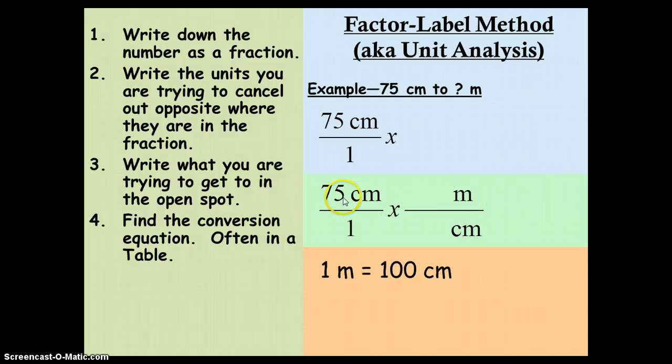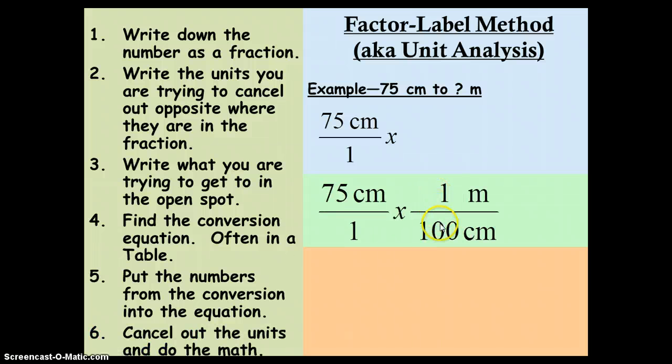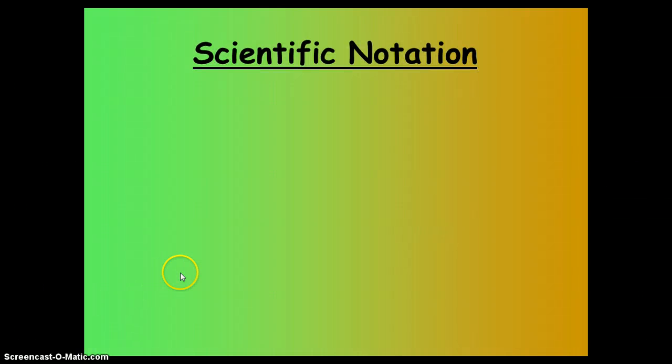You look up the conversion in a table. 1 meter equals 100 centimeters. And then you put the numbers in place where they go. 1 goes in front of the M for meters. And 100 goes in front of the centimeters because that's where you have your 100 for centimeters. The last step is to just multiply and cancel out the units. Centimeters divided by centimeters, they're going to cancel out. So you end up with 75 meters divided by 100, which is just 0.75 meters. Pretty simple.